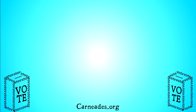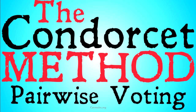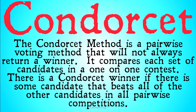Welcome back to carnadies.org. Today we're continuing our series on varieties of voting systems. In this video we will be looking at the Condorcet method, also known as pairwise voting. The Condorcet method is a pairwise voting method that will not always return a winner. It compares each set of candidates in a one-on-one contest, and there is a Condorcet winner if some candidate beats all other candidates in pairwise competitions.